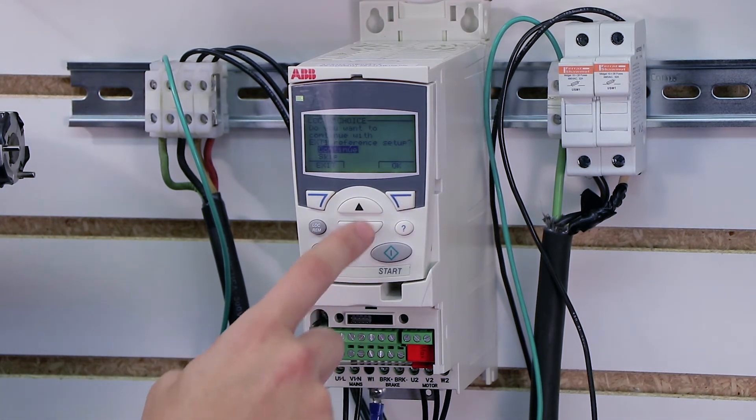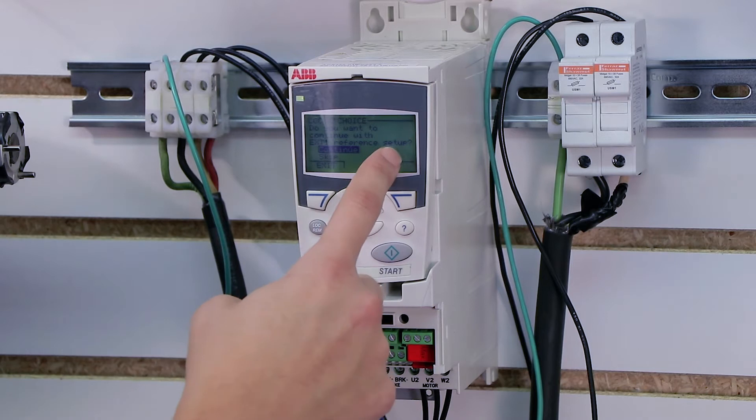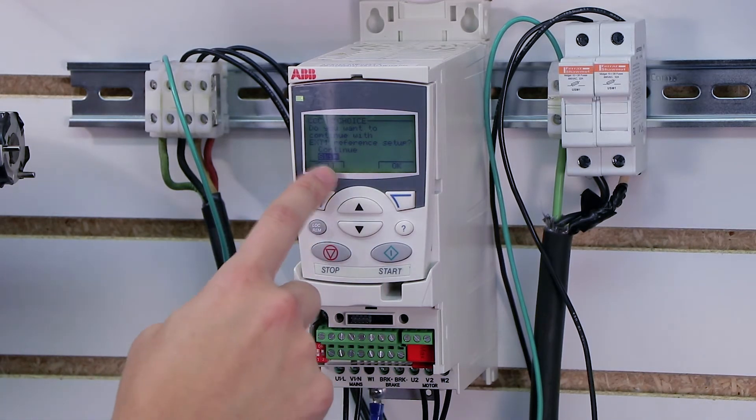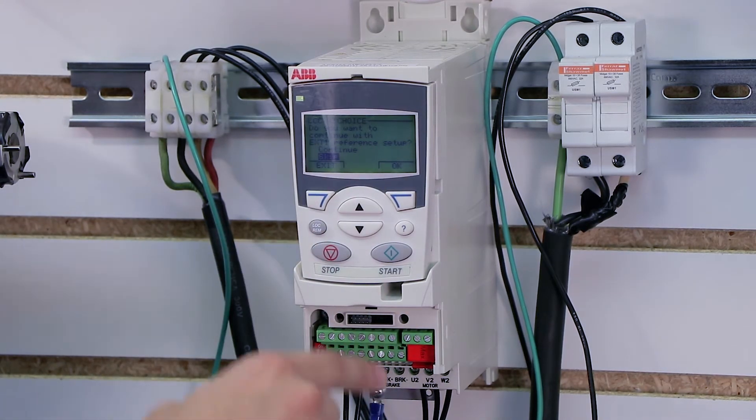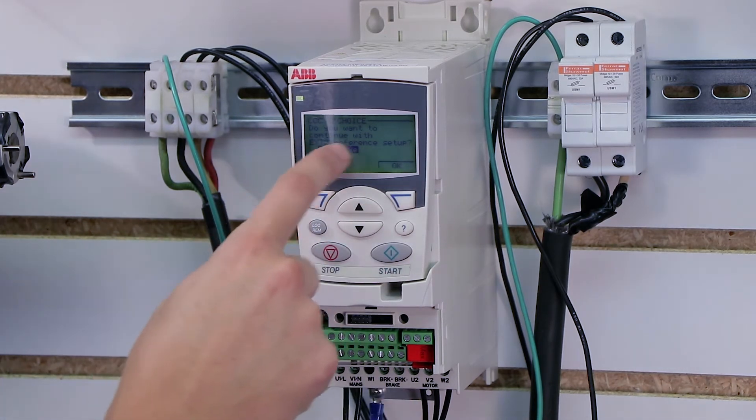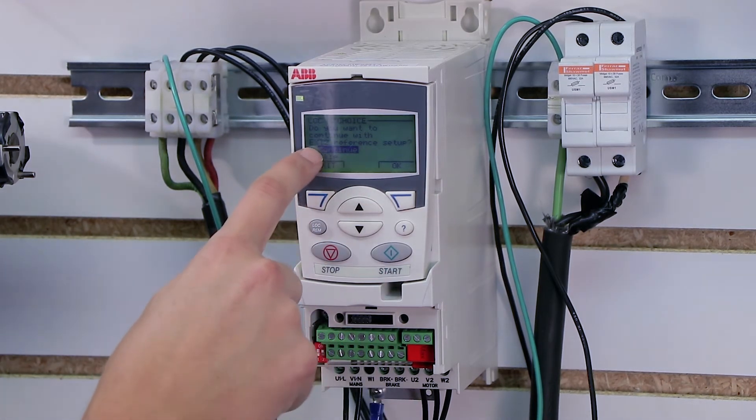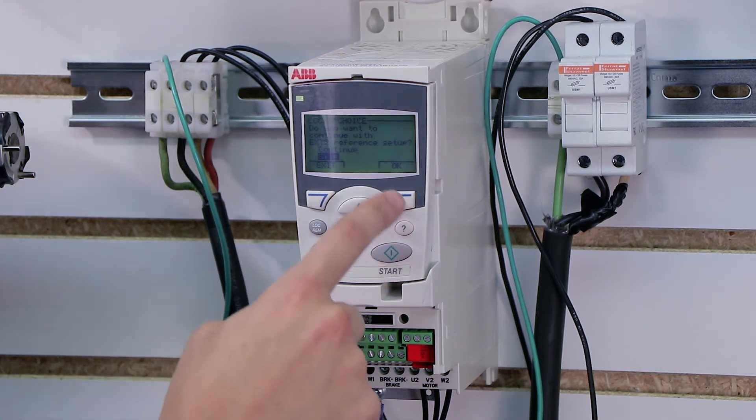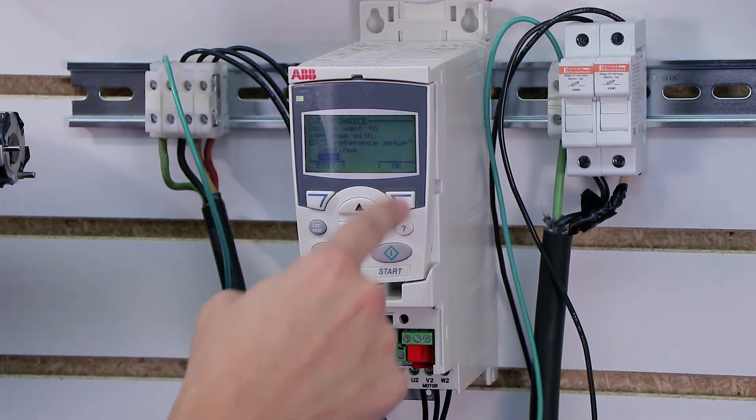And it wants to know if I want to continue with my external reference setup. In this case, we're not wiring an external speed reference, so I'm just going to skip this particular section. Then it asks me if I want to set up my second external speed reference. Well, since I don't have a first, I also don't have a second. So I'm going to skip, click okay.